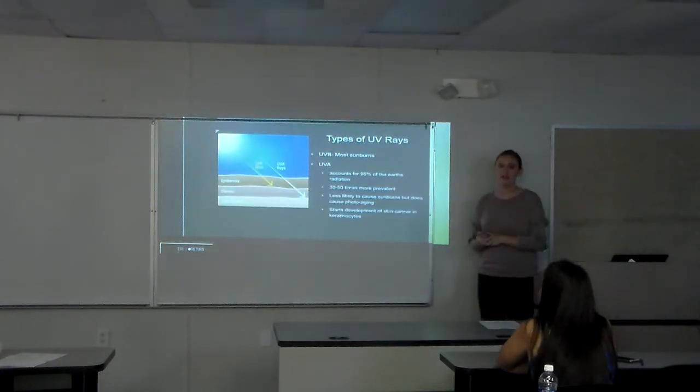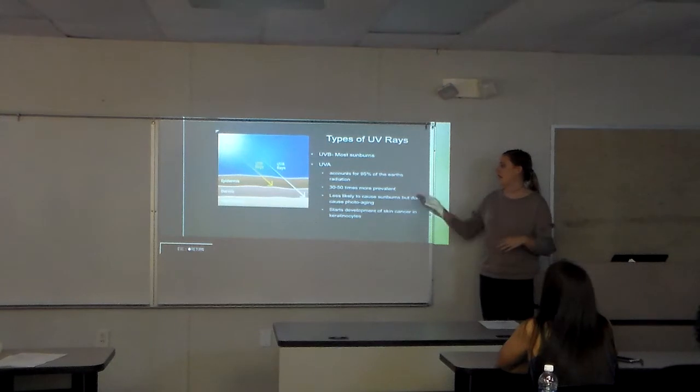There are two main types of UV rays: UVB and UVA. UVB rays burn your skin, while UVA rays penetrate deep to the hypodermis, causing photoaging, wrinkling, and developing skin cancer in the keratinocytes. Keratinocytes are where keratin is formed, which helps maintain healthy hair, skin, and nails. UVA is 30 to 50 times more prevalent than UVB rays—it's 95% of the Earth's radiation.